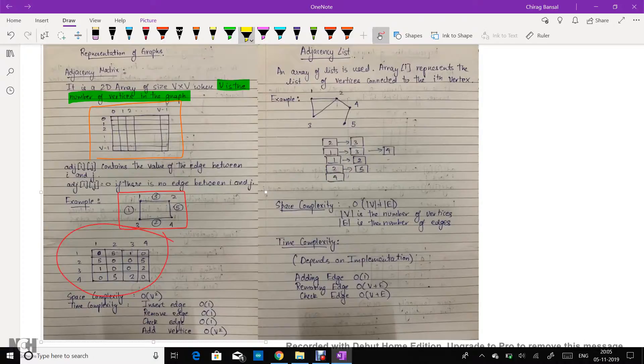And to add a vertex it is order v square, as we have to create another array of size v plus 1 cross v plus 1 and then copy the elements of v cross v.